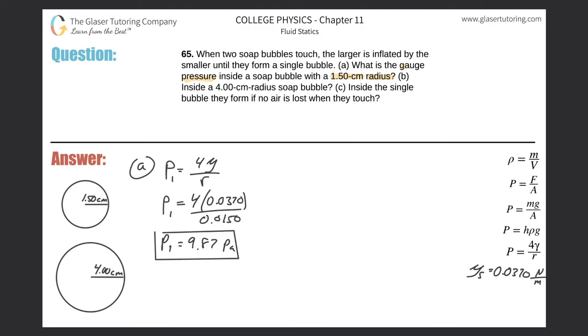Let's take a look at letter B. We need to find the gauge pressure inside a 4 centimeter radius soap bubble. Same principle here - here's bubble number two, four centimeters. P₂ equals 4 times the surface tension of that soapy water divided by the radius. Let me put a little subscript of two down here, and also back here I'll put a subscript of one.